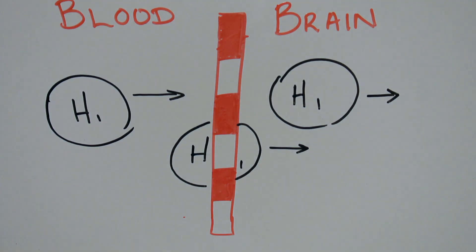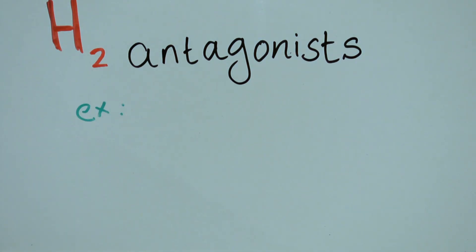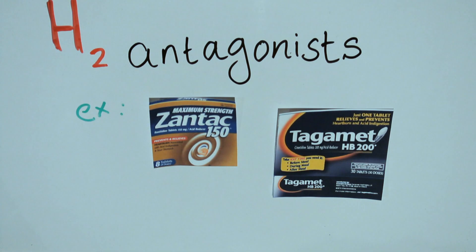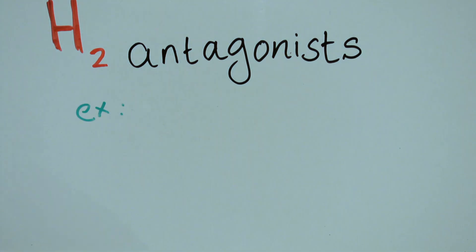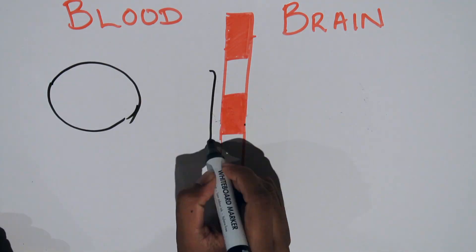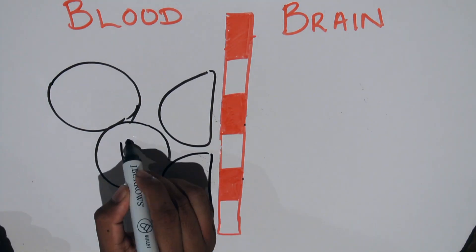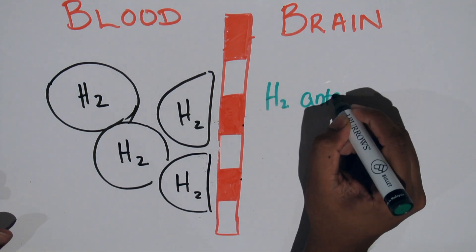Second generation antihistamines are the improved versions from the first generation H1 antihistamines. They are more selective and won't cause many side effects, whilst also providing relief of the allergic conditions. They won't cross the blood-brain barrier because of ionization at physiological pH levels.